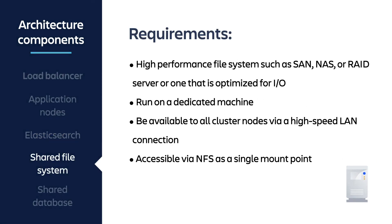Then we have the shared file system. Bitbucket Data Center requires a high-performance shared file system such as a SAN, NAS, or RAID server, or a high-performance file server optimized for IO. The shared file system must run on a dedicated machine, be available to all cluster nodes via a high-speed LAN connection, and be accessible via NFS as a single mount point.